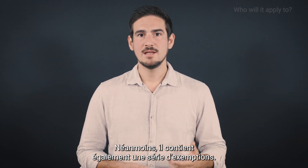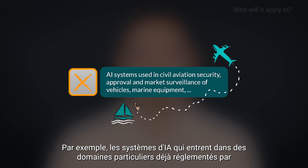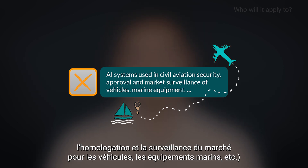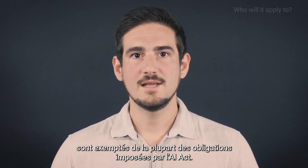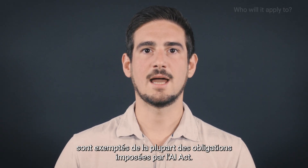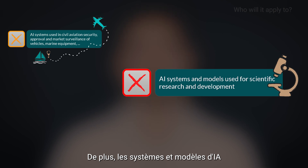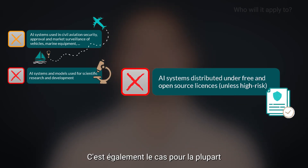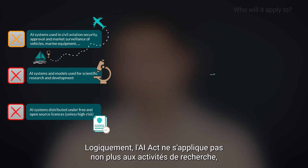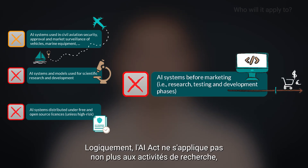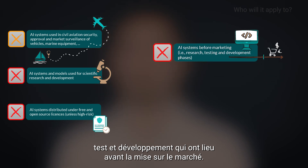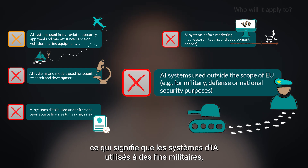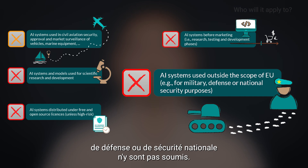However, it also contains several exemptions. For instance, AI systems entering specific fields already covered by EU sectoral legislation, such as civil aviation security, approval and market surveillance of vehicles, marine equipment, etc., are exempted from most of the obligations imposed by the AI Act. Besides, AI systems and AI models put into service for scientific research and development are also exempted. It is equally the case for most AI systems released under free and open source licenses. Obviously, the AI Act does not apply to research, testing and development activities taking place before marketing either. Furthermore, the AI Act does not apply to areas outside of EU law, meaning that AI systems used for military, defense or national security purposes are not subject to the regulation.